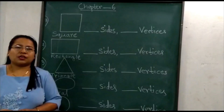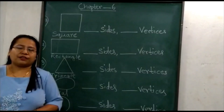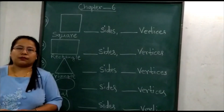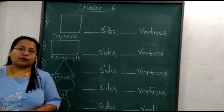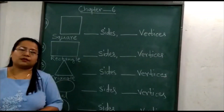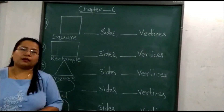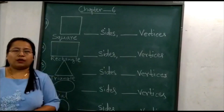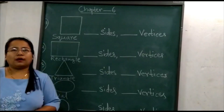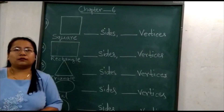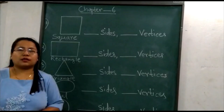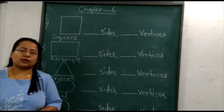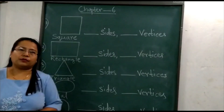Shapes are of different types and we are all surrounded by different types of shapes. Some are big and some of them are small. Now we will learn about the 2-dimensional shapes and 3-dimensional shapes from your book.